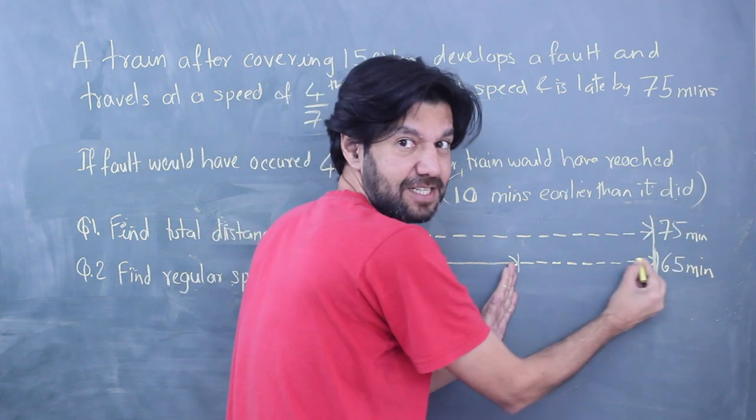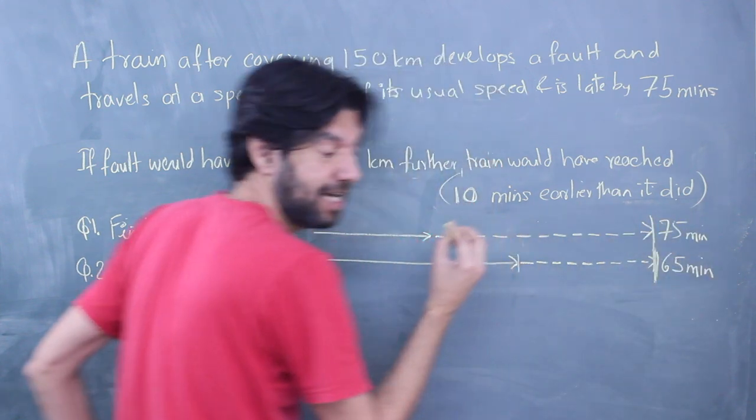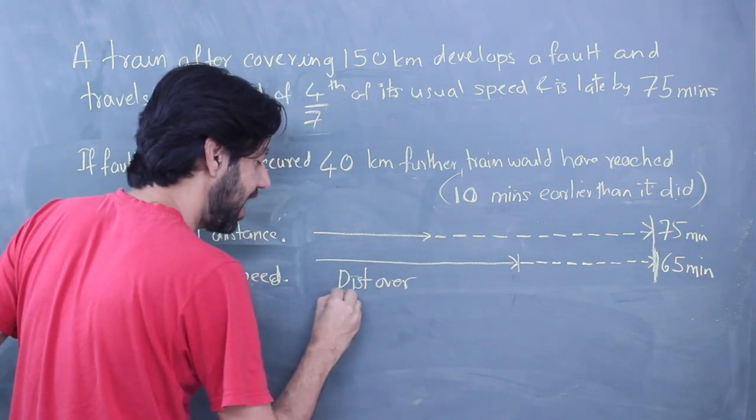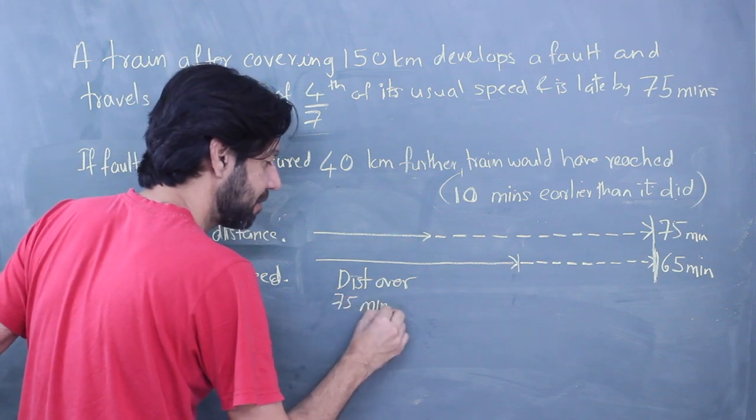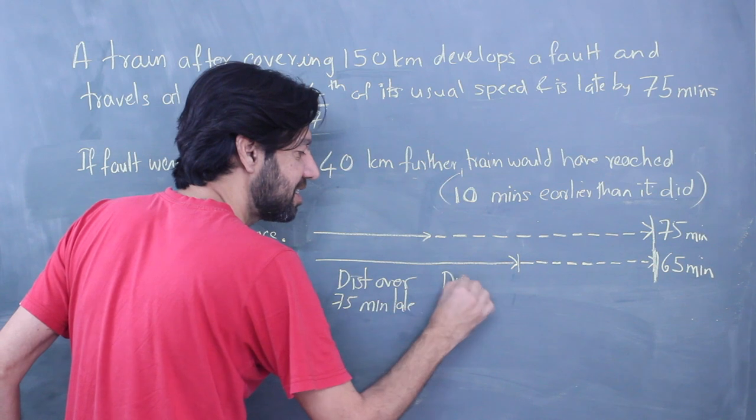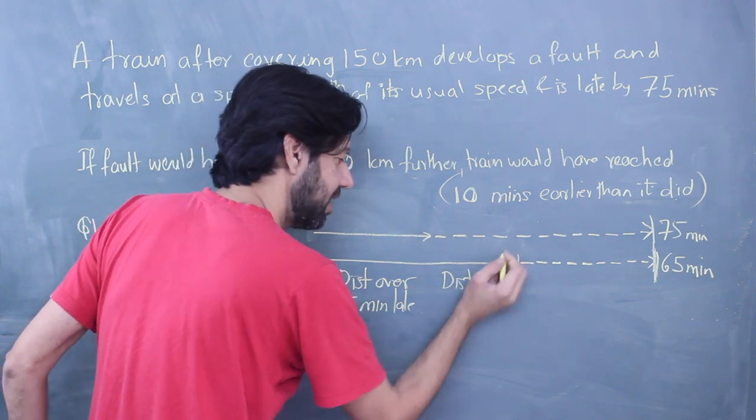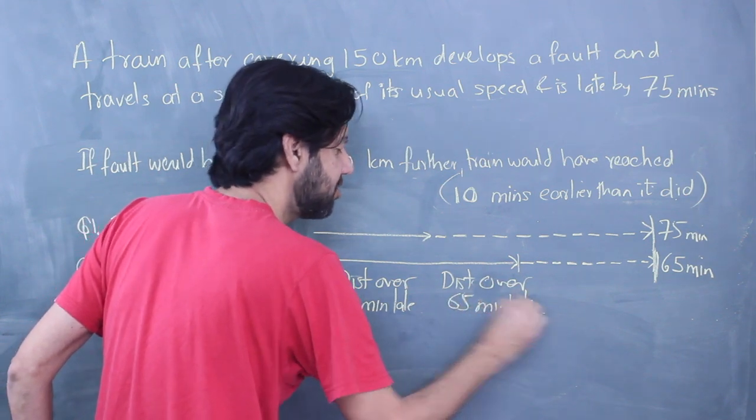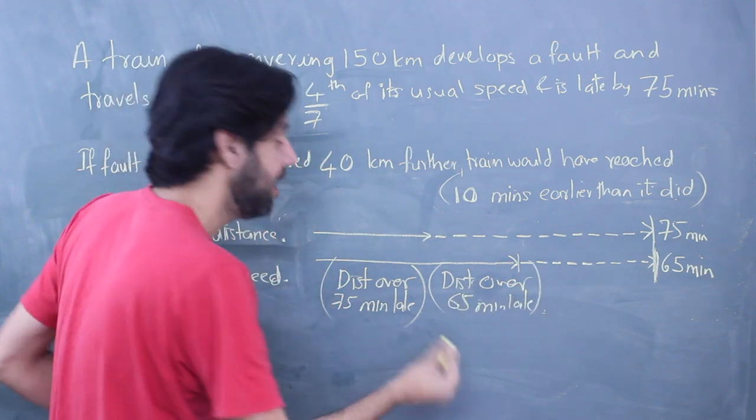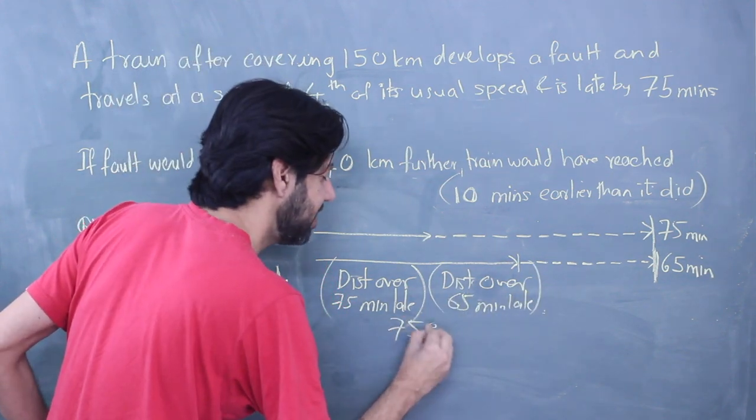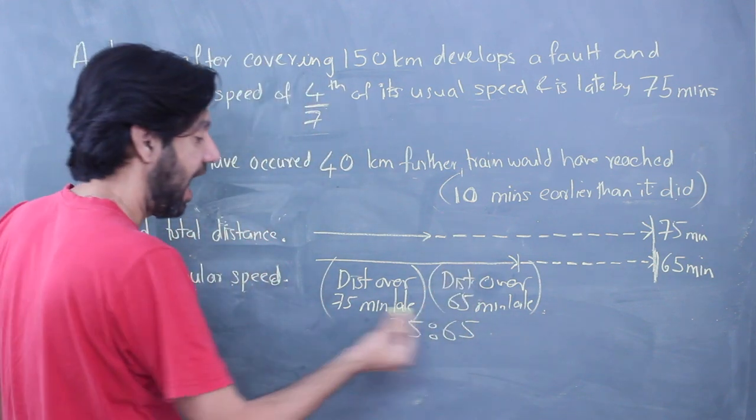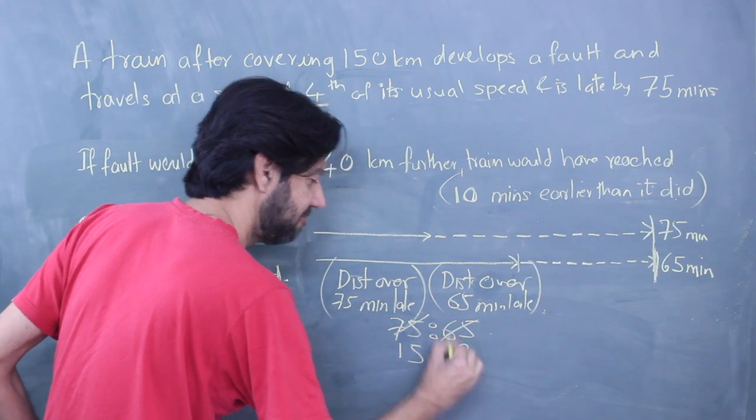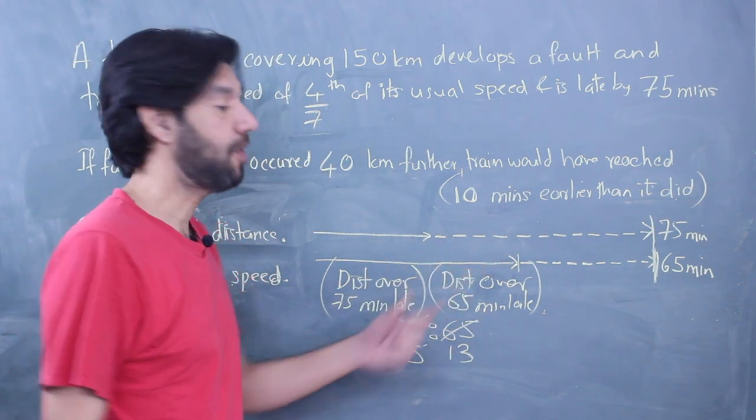What this means is the distance over which I am 75 minutes late and the distance over which I am 65 minutes late, these two distances will be in the ratio 75 to 65. This ratio simplifies to 15 to 13. What else do I know? The difference of the two distances is 40 kilometers.